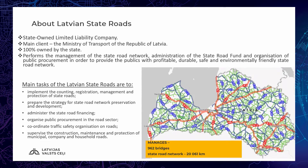Maintenance and development of municipal company and household roads is supervised as well. Main tasks of Latvian State Roads are to implement the counting, registration, management, and protection of state roads, as well as consulting and services in the road sector. Latvian State Roads manages 962 bridges and the total length of bridges is more than 30 kilometers. Total length of roads under our supervision is more than 20,000 kilometers.